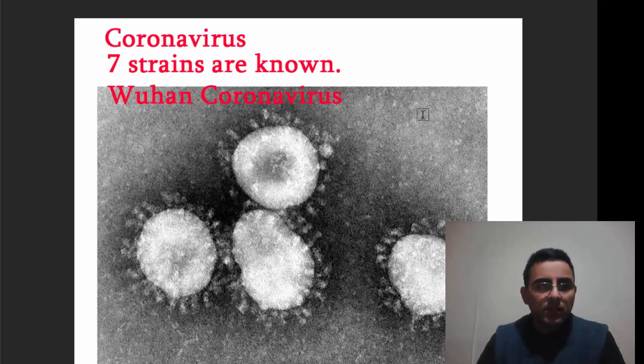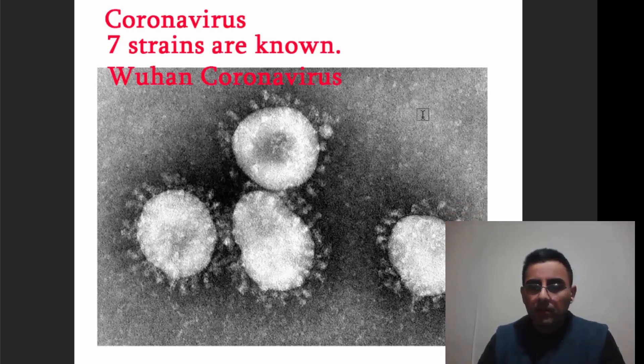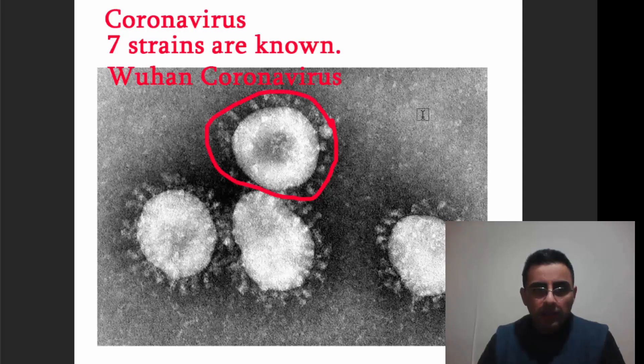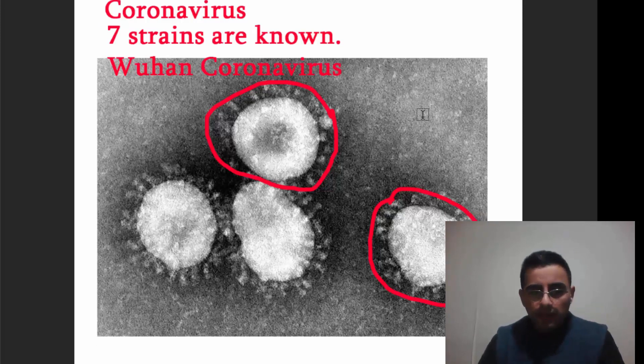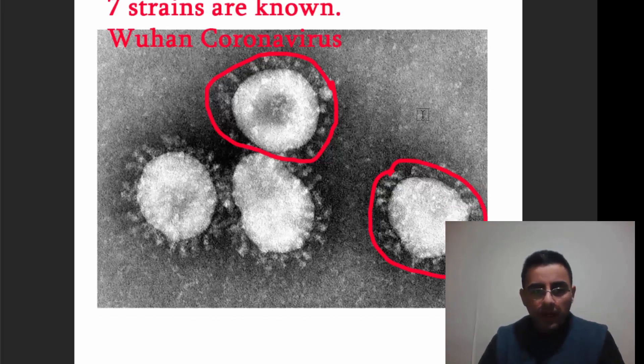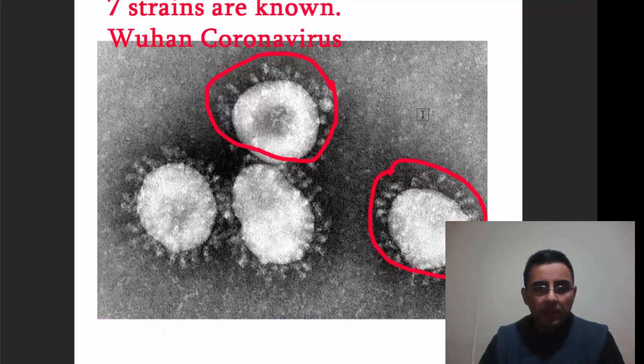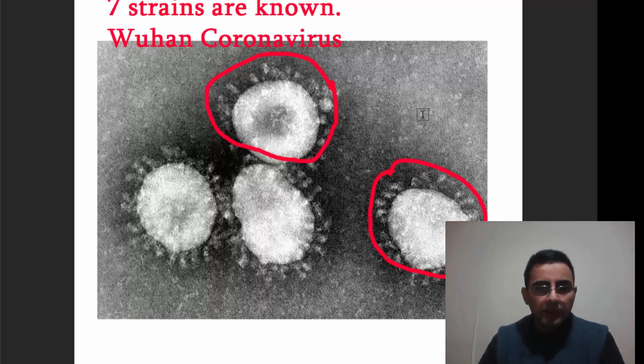Why is it called coronavirus? Because of its appearance on microscope, you can see it looks like a corona, a royal corona. Here actually, it's protein spikes. These spikes are needed to attach to human cells in the human body.